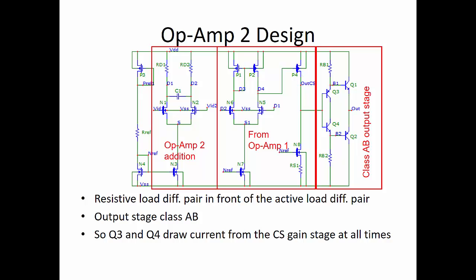The output stage in this case is a class AB output stage, which has a lower distortion. In this case, transistors Q3 and Q4 draw current from the common source gain stage at all times, and that is going to impact the biasing of that gain stage.